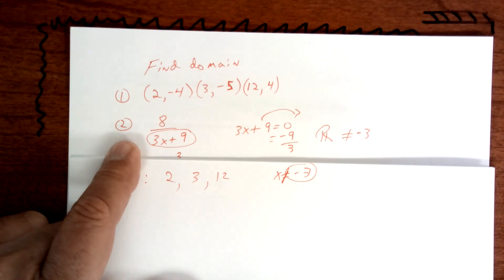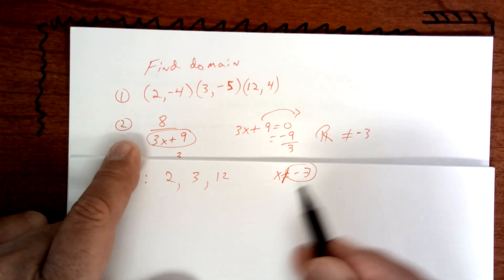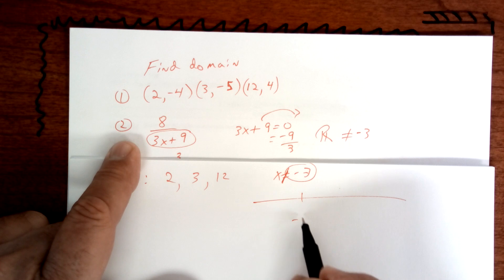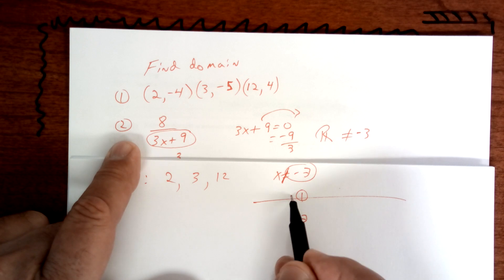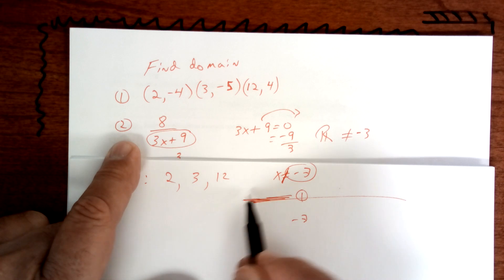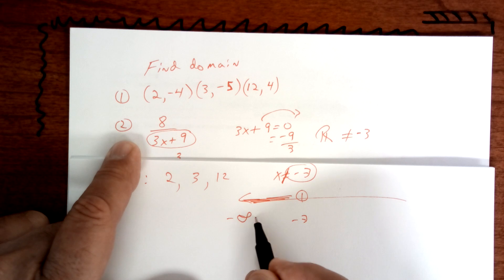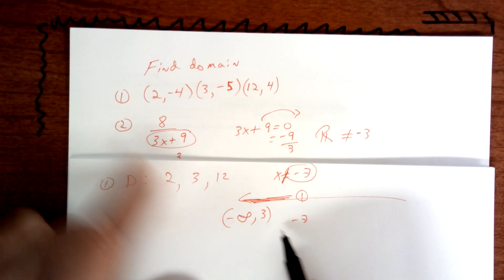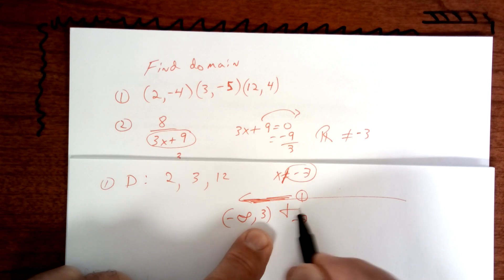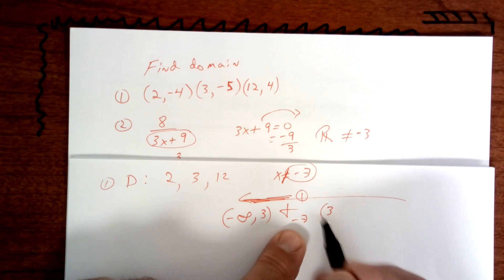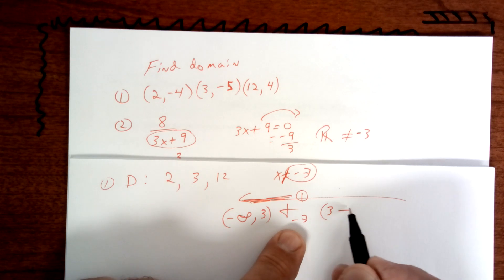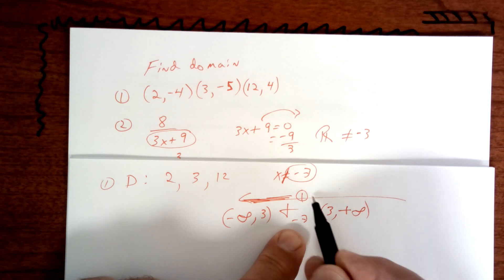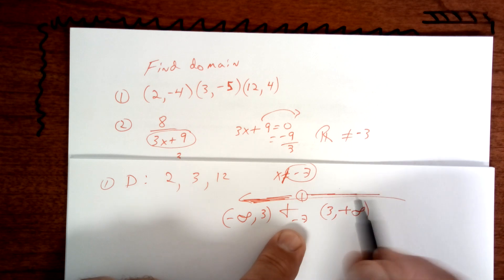How would that look? Let's say this is negative 3. It would be everything from negative infinity all the way up to negative 3, but not including negative 3. And it would be from negative 3 all the way to positive infinity. And that's how you would write it.